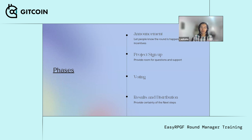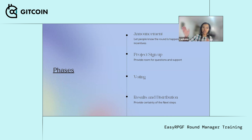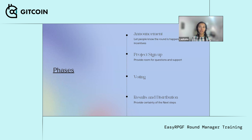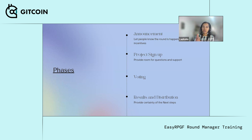The first phase is the announcement. You want to let people know the round is happening so you can start aligning incentives — it's like giving a shout-out: start building, start producing the kind of impact we believe is valuable in our community. The second phase is project signup. If you're incentivizing future work, give enough time from the announcement to project signup so people can deliver the impact or value you're looking for.